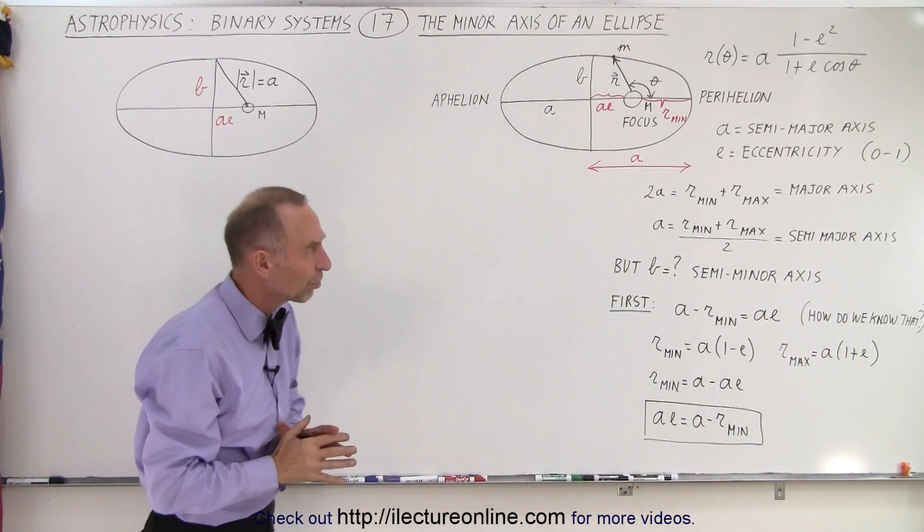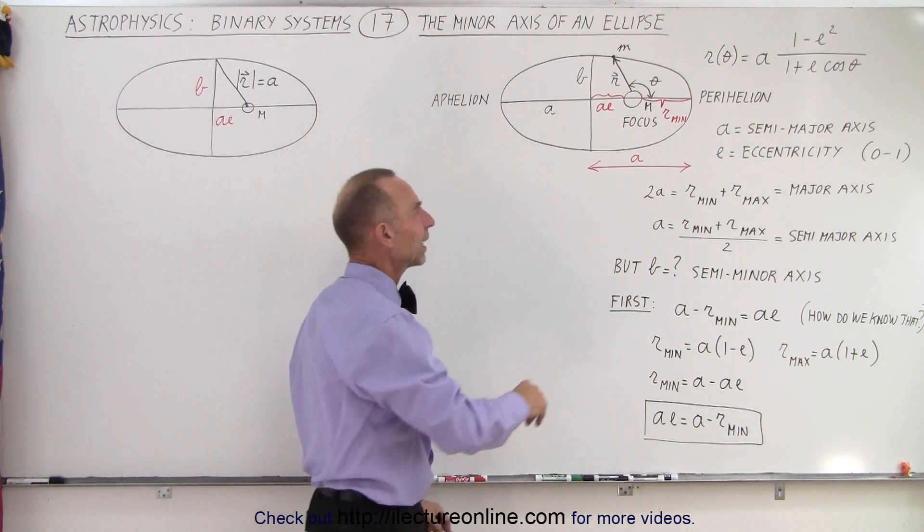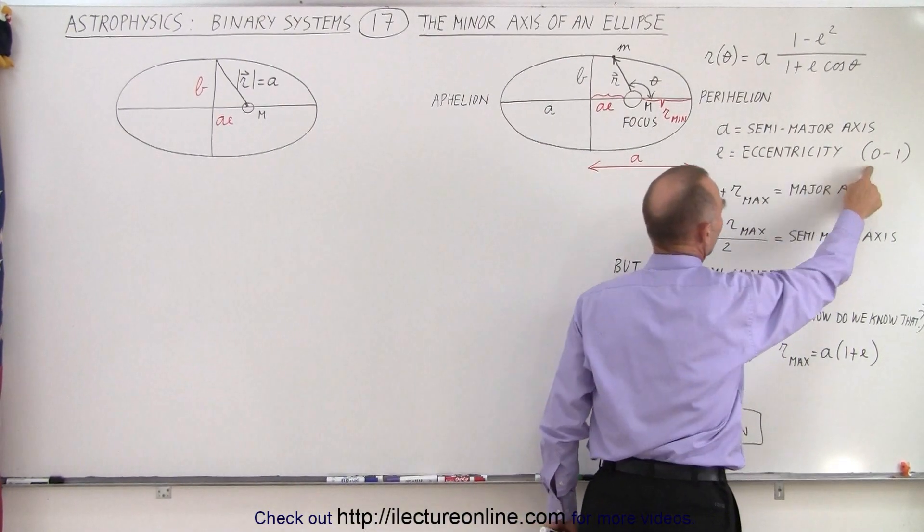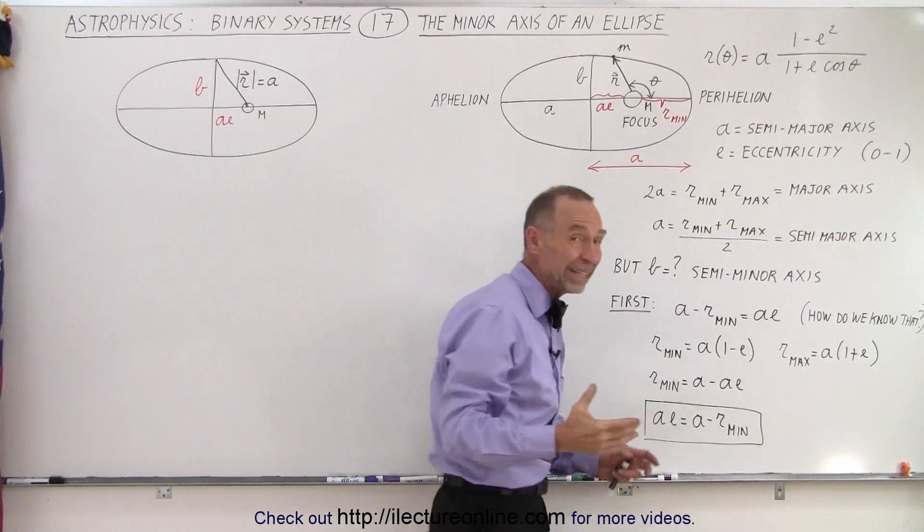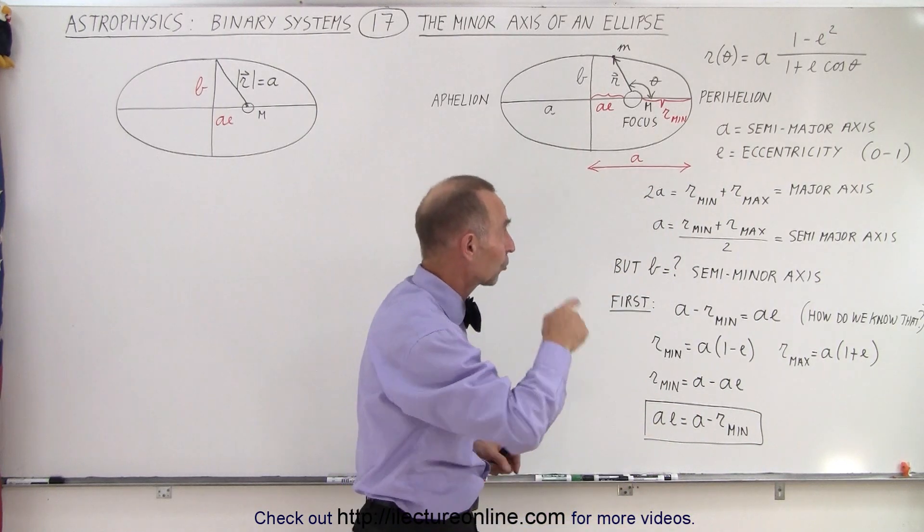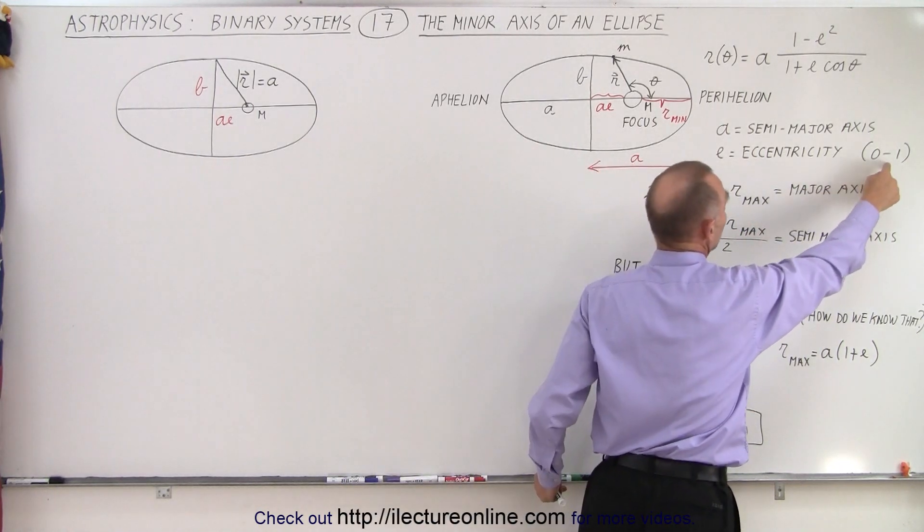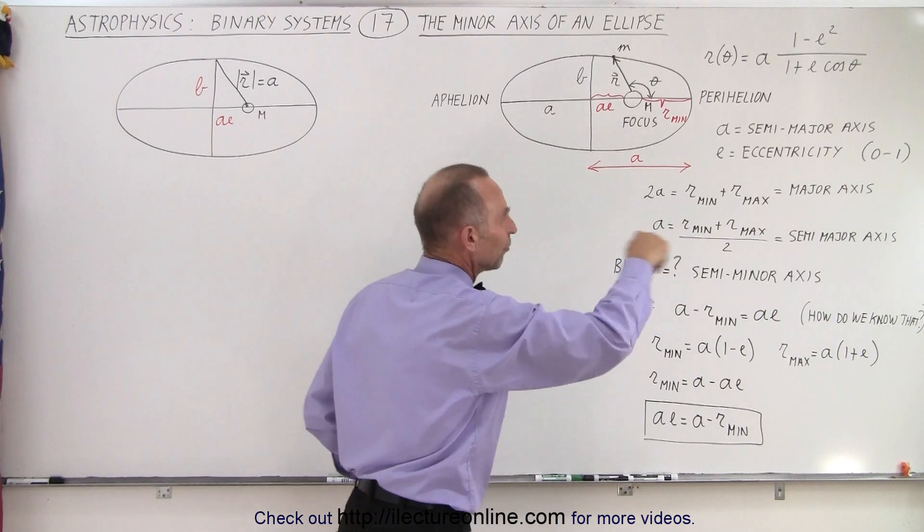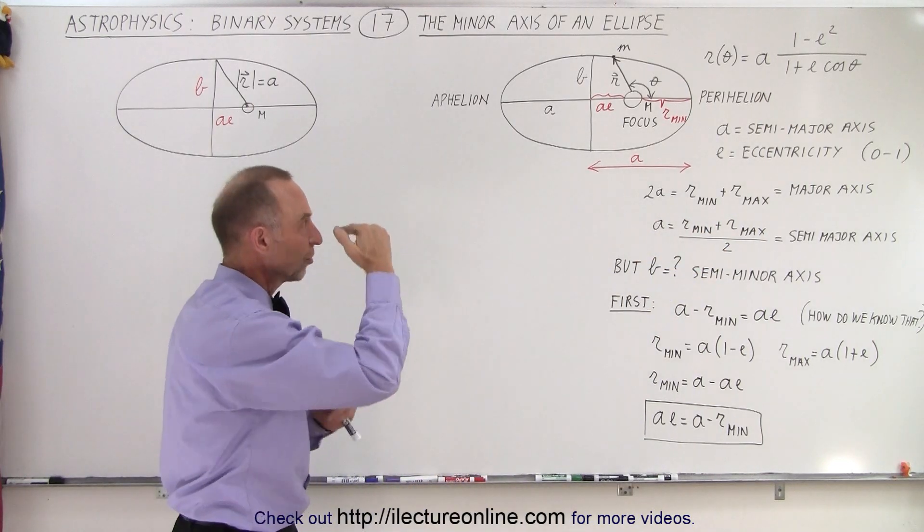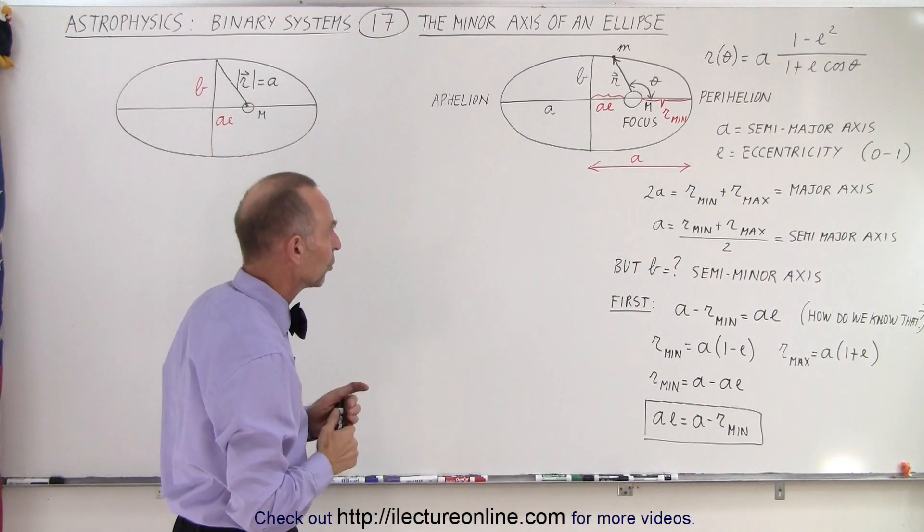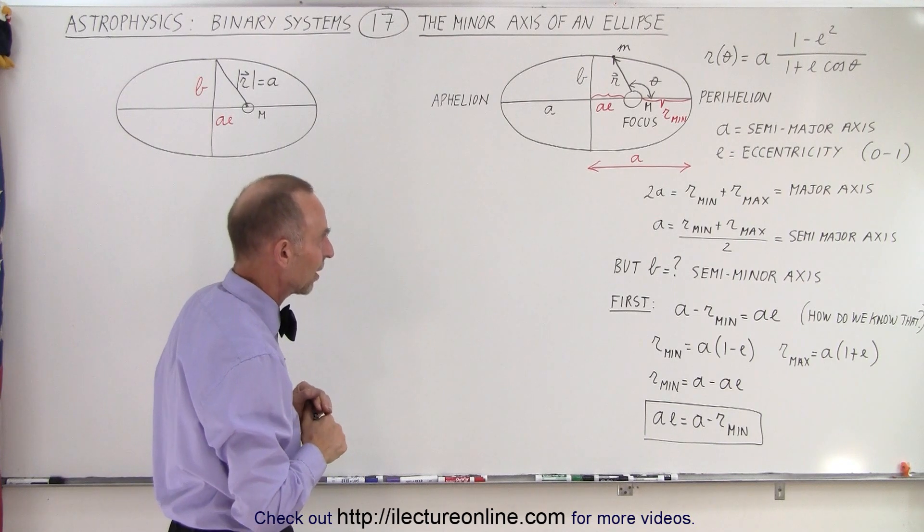Now we saw that in some previous videos. Remember that e is the eccentricity, which can take on values from 0 to 1. If the eccentricity is 0, then we have a perfect circle. If the eccentricity is 1, then the object moves back and forth on a line. There's no distance in the vertical direction. B would essentially be 0 at that time.